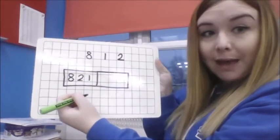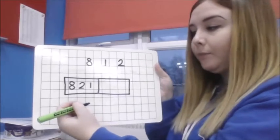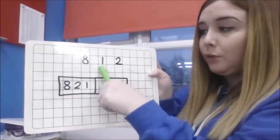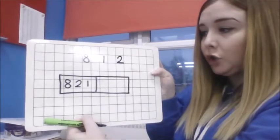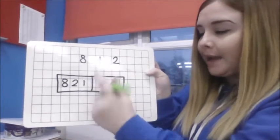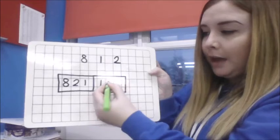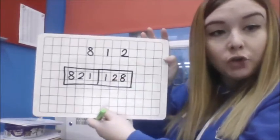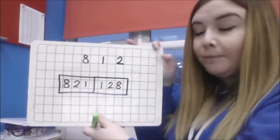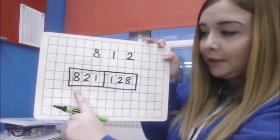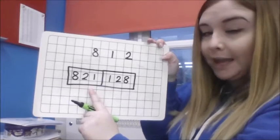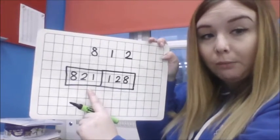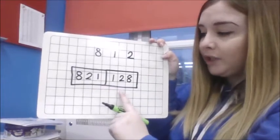And to make my smallest number I'm going to put my smallest digit at the start in the hundreds column. And that's my 1 and then my 2 and then my 8. So you can see that by just using those 3 digits I've been able to create the number 821 as my biggest number. And for my smallest number I've made the number 128.